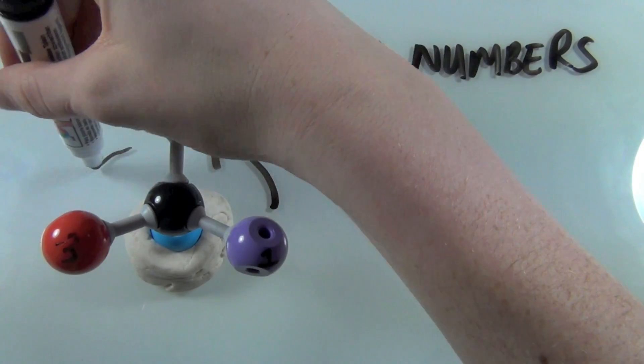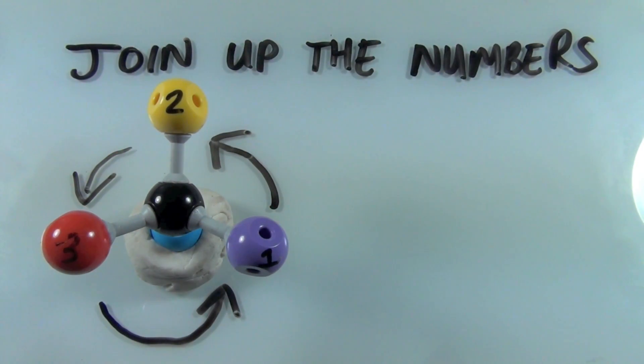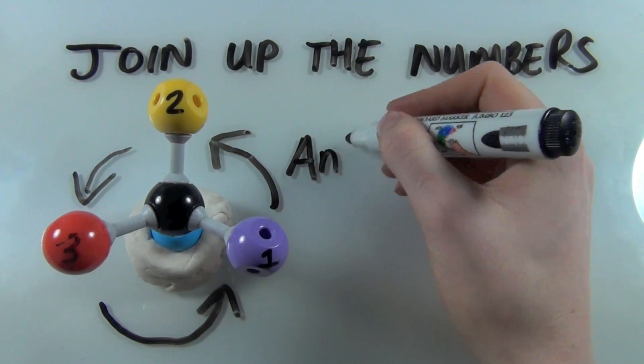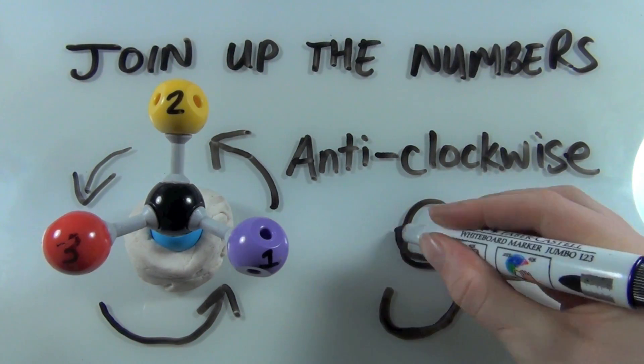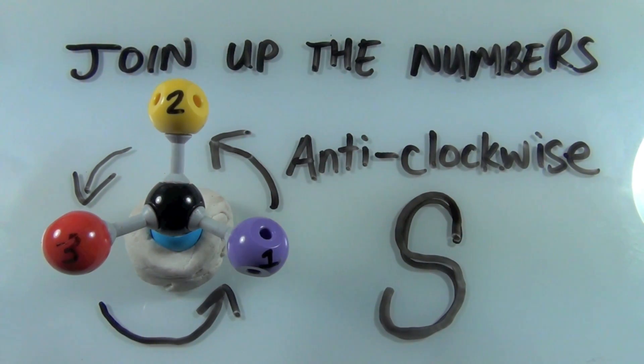And then very simply, you join up the numbers. And in this case, we joined up the numbers in an anti-clockwise fashion. And so the configuration of this molecule we call S.